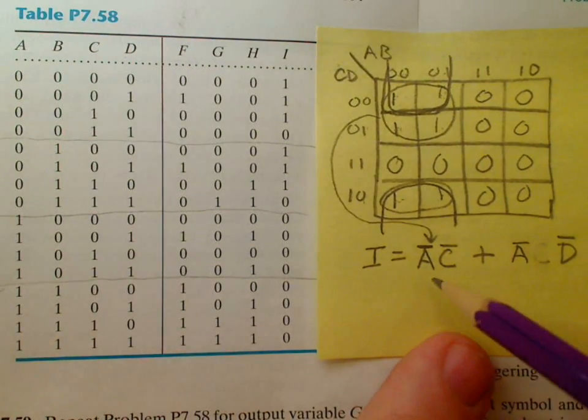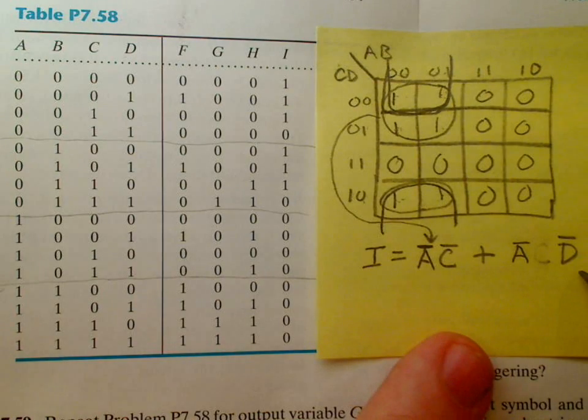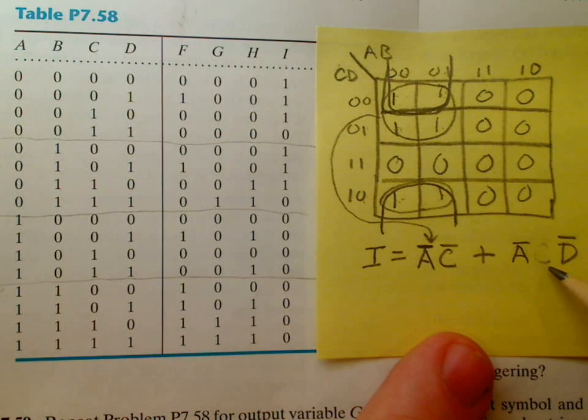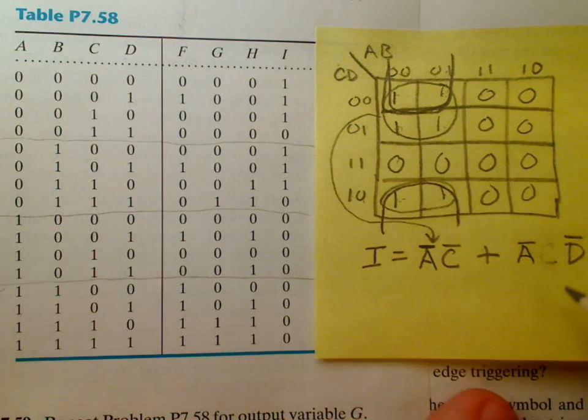So now if we created a circuit that had, that represented this logic expression, it would also satisfy this one, but it has one fewer input, and therefore you could use a two input AND gate rather than a three input AND gate in this particular case.